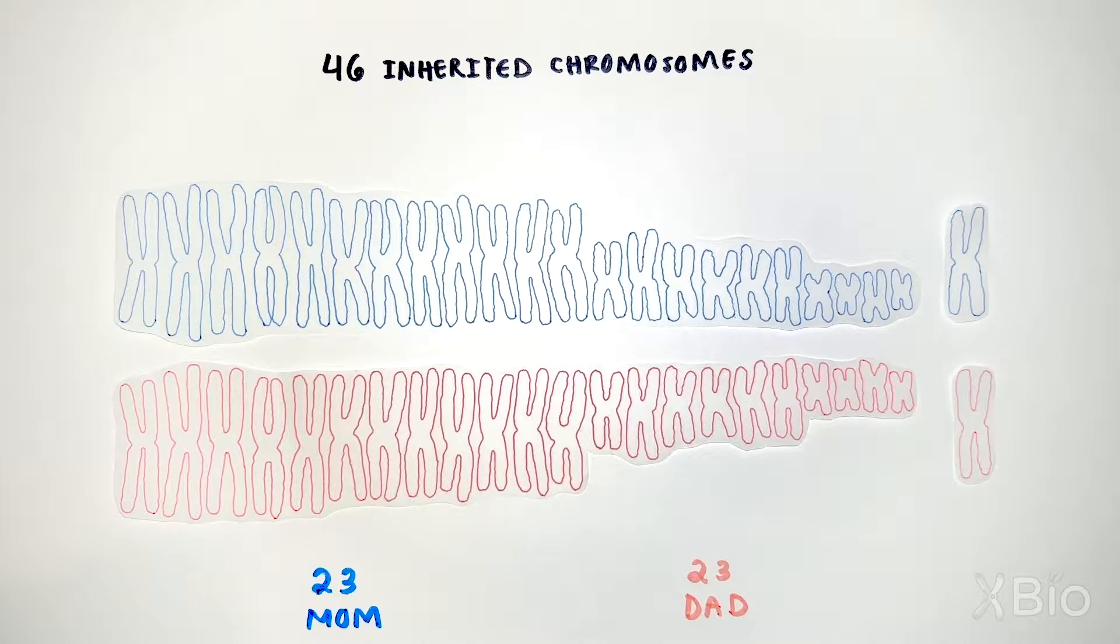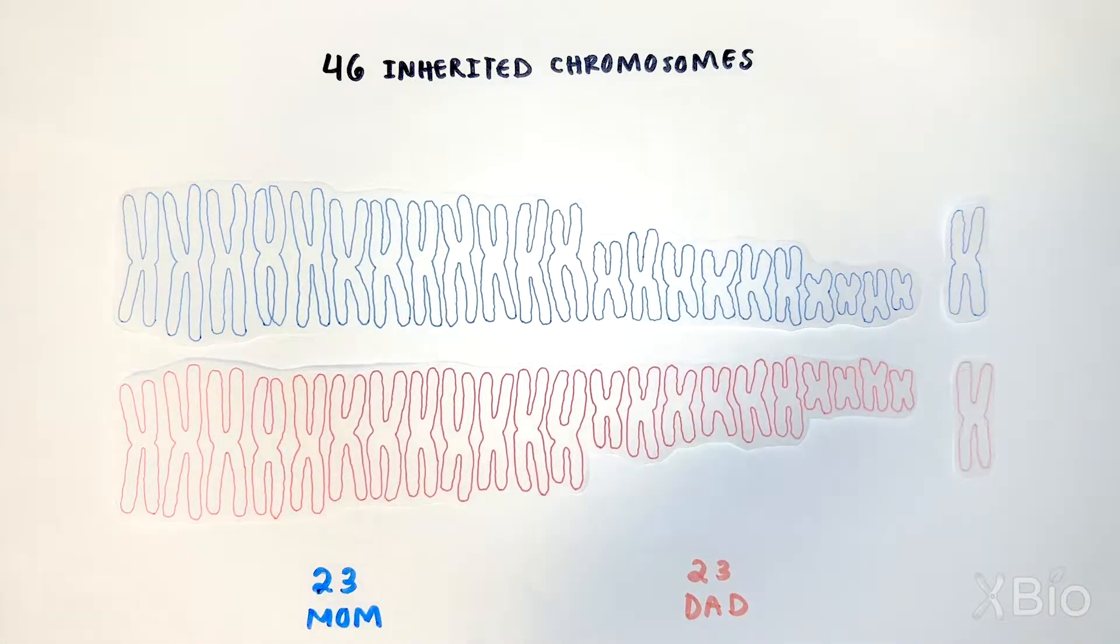If you accidentally inherit one too little or one too many chromosomes, consequences can be severe. For example, Down syndrome occurs when you have three instead of two copies of chromosome 21.